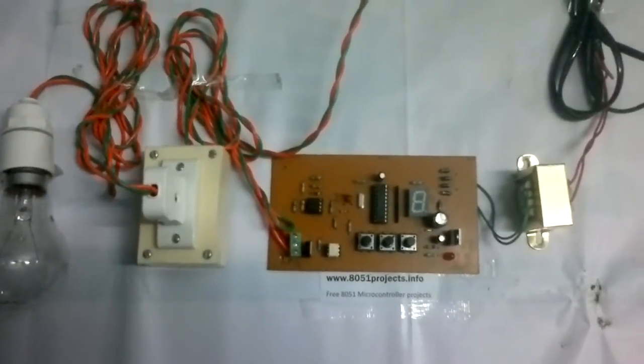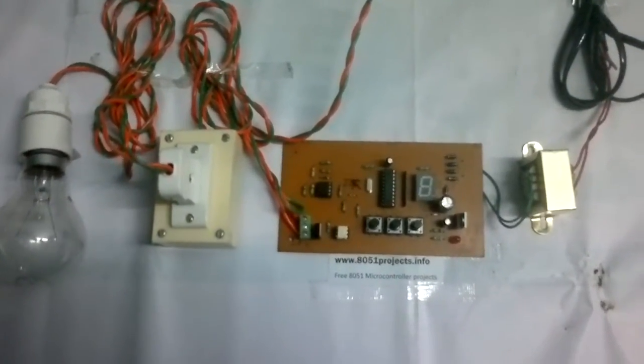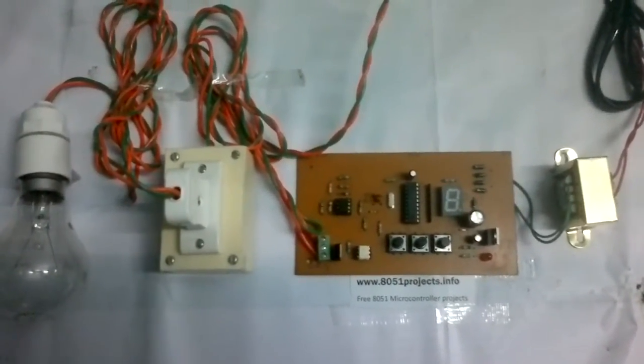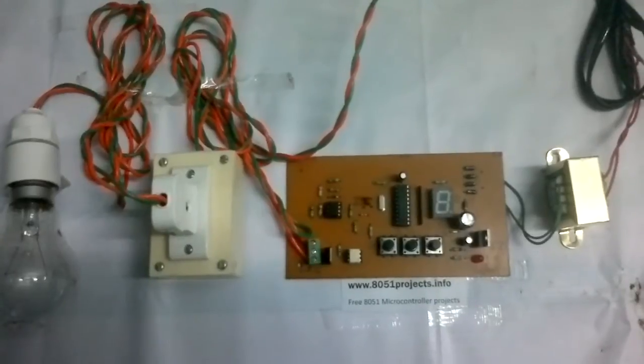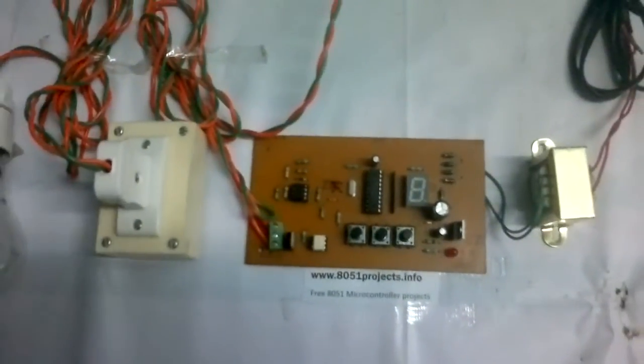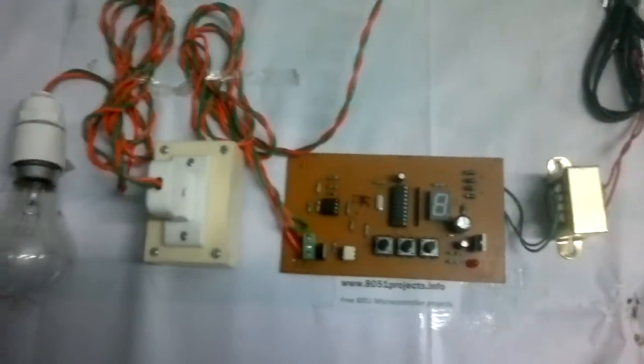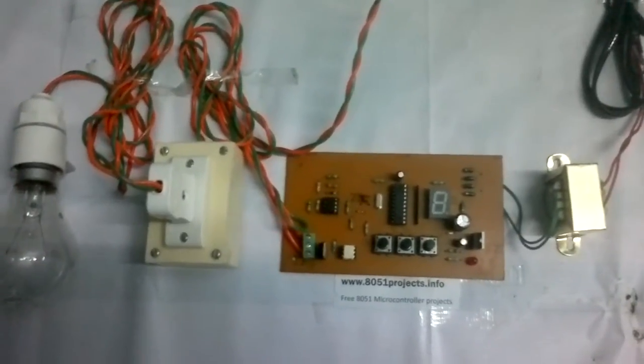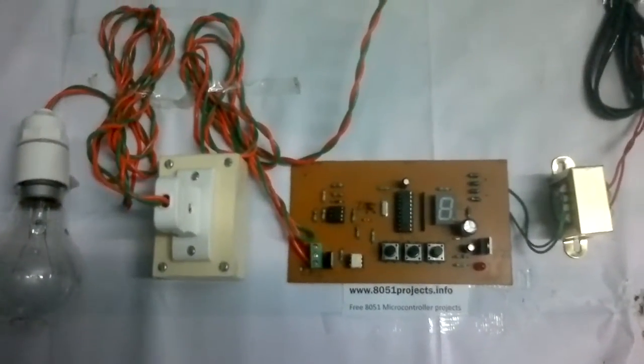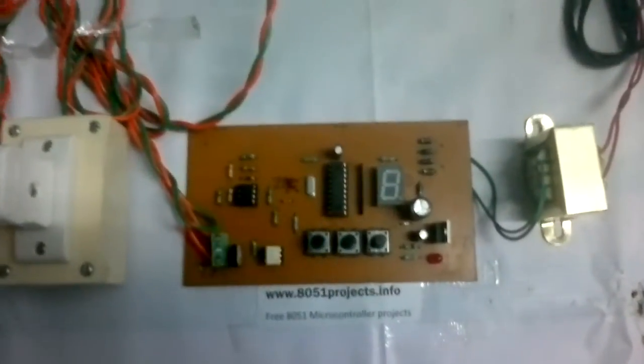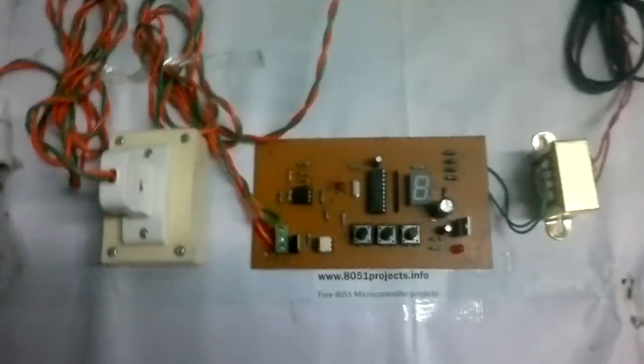Hi, this is a thyristor control project, or it can be said as triac control of any home appliances. In this project we are going to control the speed of a fan or a bulb, that is the bulb can be made to get dim or bright. So it is purely a digital control.